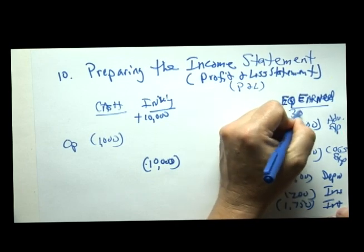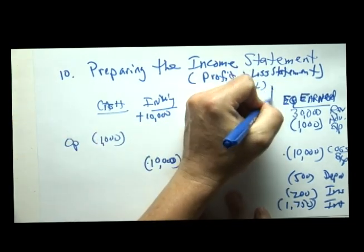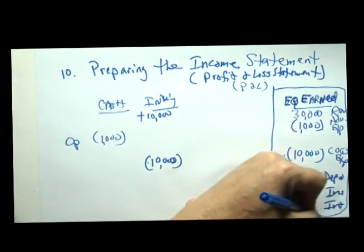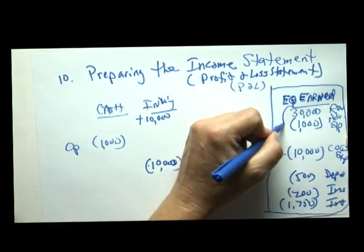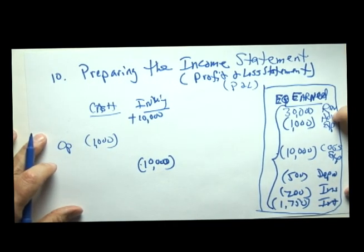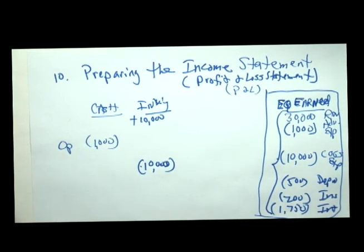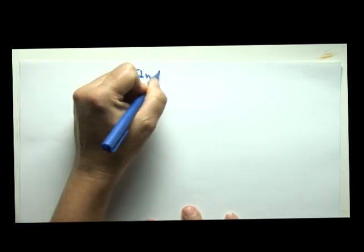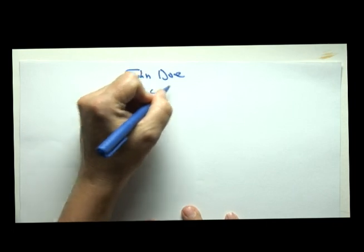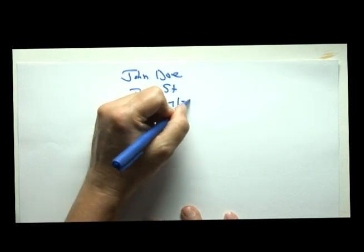Recall that equity earned also went up during the period because of our revenues when we sold the bike. When we compute or prepare an income statement, we look at all changes in equity earned during a period, which by definition are revenues and expenses, and we make it look like a nice formal sheet, just like we did for the balance sheet. We're going to put up a new sheet here and say: John Doe income statement for the month ended 7/31/13.